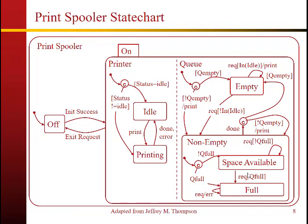Here's an example: the print spooler, which is a finite state machine. There's one top-level state, the print spooler, consisting of two basic states: the off state and the on state. The on state encompasses all the detail inside. The print spooler is the high-level view of what we're trying to implement. The entry point arrow means when you fire up it comes into the off state. If initialization is successful, it transitions into the on state.